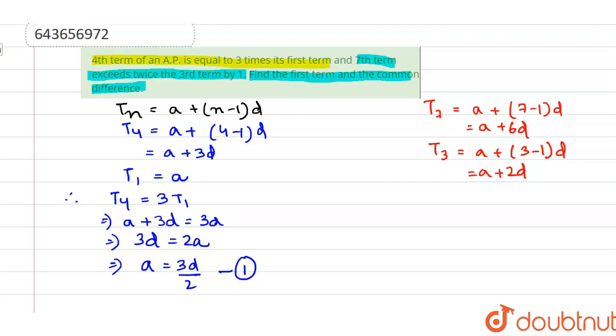According to the second statement, we have that the seventh term exceeds twice the third term by 1. So, t7 should be equals to 2 times t3 plus 1 because it exceeds by 1.